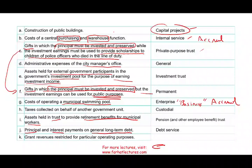Transaction K: grant revenue — restricted for a particular operating purpose. They gave us money, but it's restricted: you can't do anything you want with it. It's restricted for a specific purpose, for example, the state gave us money to buy a new computer system for our city. In these funds, we account for legally restricted revenue — other than those restricted for capital project or debt service purposes. Under those circumstances, we have the special revenue fund. The revenue is for a particular purpose, therefore it's the special revenue fund.